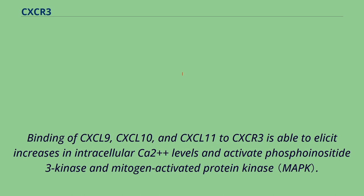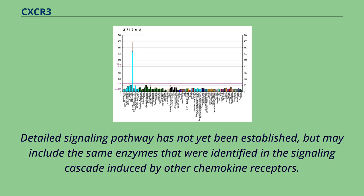Binding of CXCL9, CXCL10, and CXCL11 to CXCR3 is able to elicit increases in intracellular Ca2+ levels and activate phosphoinositide-3 kinase and mitogen-activated protein kinase. Detailed signaling pathway has not yet been established, but may include the same enzymes that were identified in the signaling cascade induced by other chemokine receptors.